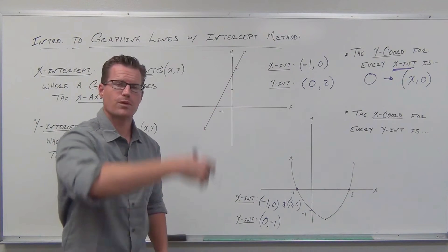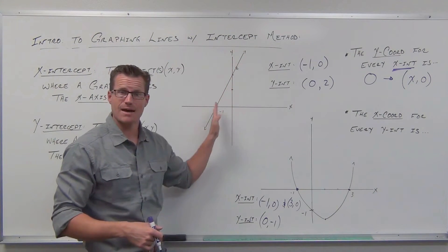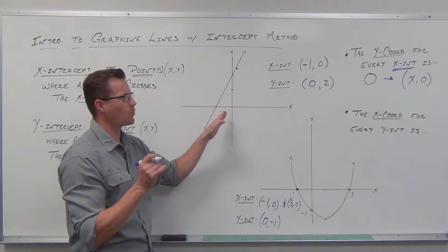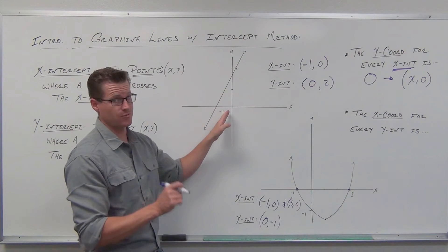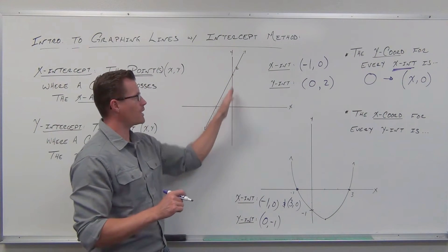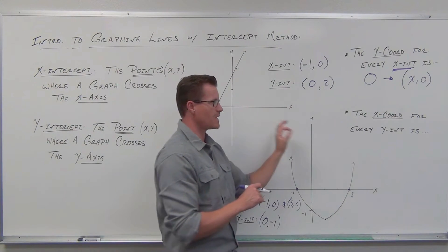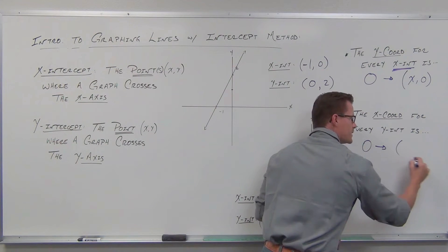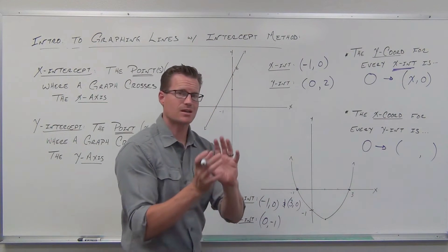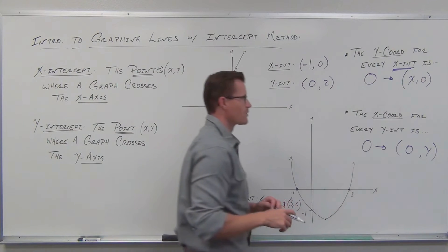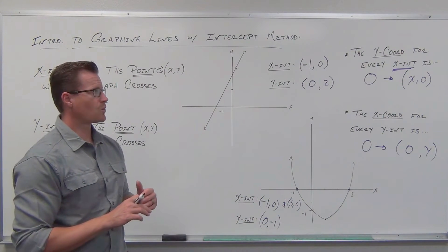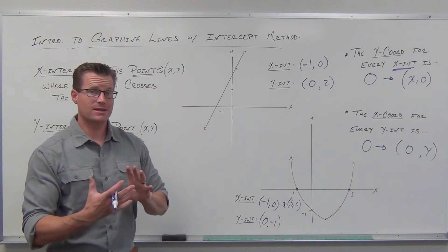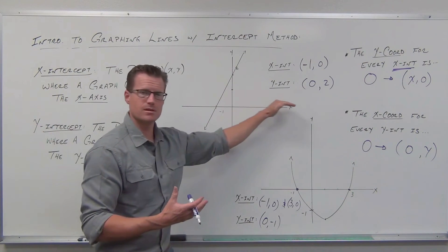How about the x-coordinate for the y-intercept? What puts us on the y-axis is having an x-value of zero. Zero for x puts us somewhere on the y-axis, so every single y-intercept ever is going to have an x-value of zero. Zero, two. Zero, negative one. Always zero to put us on that y-axis. So every y-intercept ever has an x-coordinate of zero, giving us a point that looks like: zero, comma, whatever the y-value is.